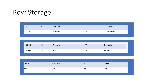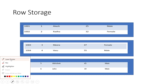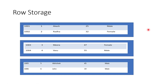Looking at the diagram, consider all the blue blocks as being fetched in a single block IO — meaning two rows per block IO are fetched. So if I have to search for the details of John, I may have to do three IOs to get to that record.